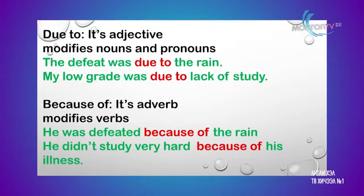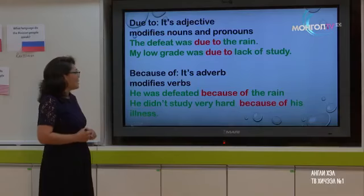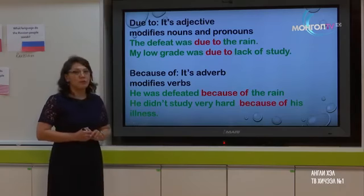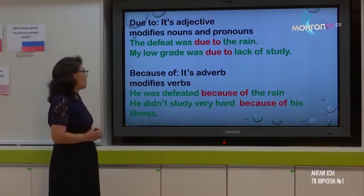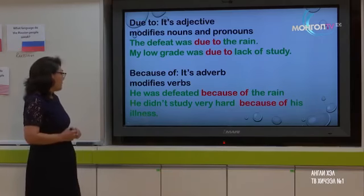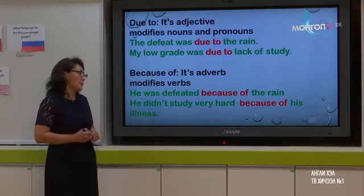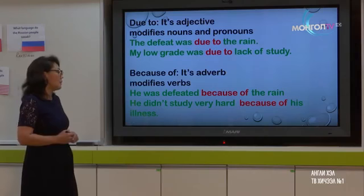The next clause of reason is 'because of'. It's an adverb, so when you use 'because of' you have to pay attention — it is an adverbial clause, and that's why it modifies verbs. For example: 'He was defeated because of the rain' — 'because of' modifies the verb 'was defeated'. Another example: 'He didn't study very hard because of his illness' — 'because of' modifies the verb phrase 'didn't study'.